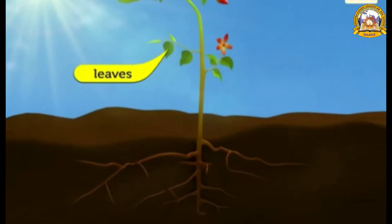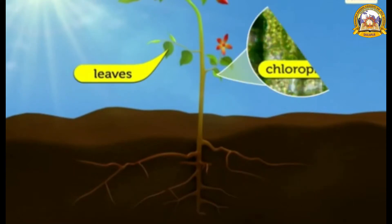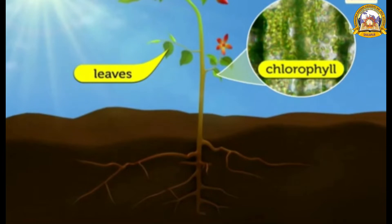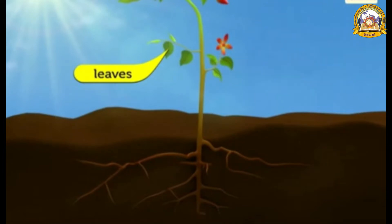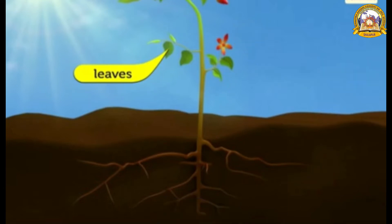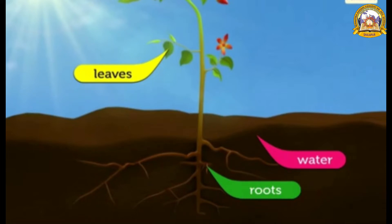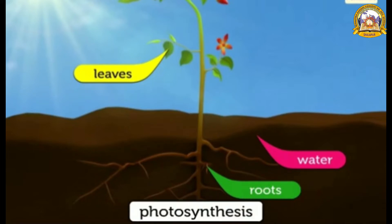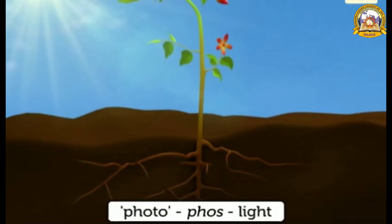The leaves trap the energy in sunlight using chlorophyll. This energy is used to make sugar from carbon dioxide, which they get through their stomata, and water, which is absorbed by the roots. The process is called photosynthesis.